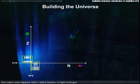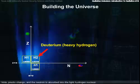Now watch what happens as I add a neutron to light hydrogen. Voila! Presto change-o, and the neutron is absorbed into the light hydrogen nucleus, and it's changed into deuterium, or heavy hydrogen.